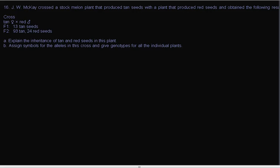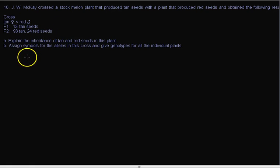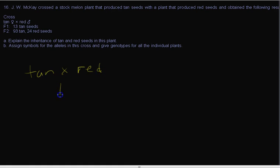This is problem 16 from chapter 3. It's a good example of a problem that gives you actual data instead of just giving you the ratio. It gives you real numbers and asks you to figure out what the ratios are. It's a cross between tan and red: we get all tan in the first generation, and then we get 93 tan and 24 red in the next.